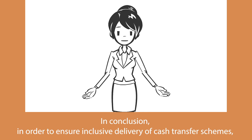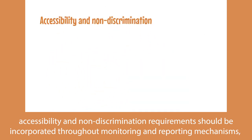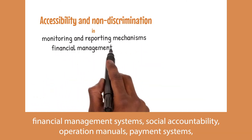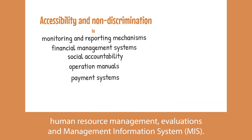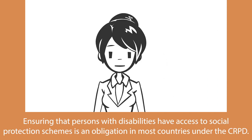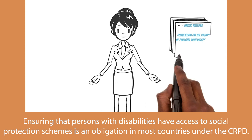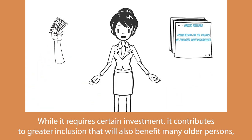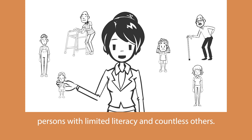In conclusion, in order to ensure inclusive delivery of cash transfer schemes, accessibility and non-discrimination requirements should be incorporated throughout monitoring and reporting mechanisms, financial management systems, social accountability, operation manuals, payment systems, human resource management, evaluations, and management information systems. Ensuring that persons with disabilities have access to social protection schemes is an obligation in most countries under the CRPD. While it requires certain investment, it contributes to greater inclusion that will also benefit many older persons, persons with limited literacy, and countless others.